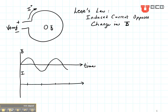Now let's look at Lenz's Law. Lenz's Law tells us that the induced current opposes the change in magnetic field. So suppose that my initial magnetic field is shown here coming out of my loop. We know that generally it would produce a current going in this direction around it.